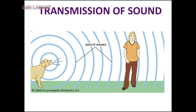Transmission of sound: All the sounds that we hear reach us through the surrounding air. The density of air also changes due to change in its temperature. In winter, the density of air increases. We can hear the whistle of a distant train clearly early in the morning in winter. Air is useful as a medium for the transmission of sound.